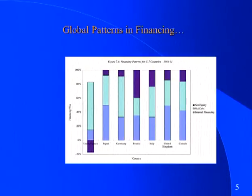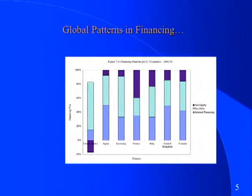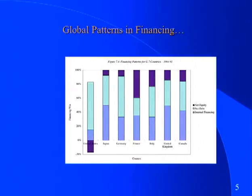What does negative net equity mean? It's the difference between equity issues and equity buybacks. Between 1984 and 1991, publicly traded U.S. companies actually took equity out of the business rather than put equity in. Over the last 25 years in the U.S., this has generally been true for large to mid-sized companies — new equity issues are overwhelmed by stock buybacks. In 1984–91, stock buybacks were unheard of in many other countries, but now you're starting to see them even abroad.